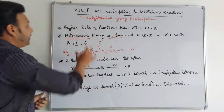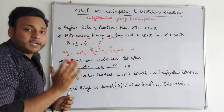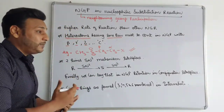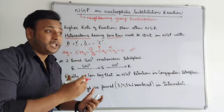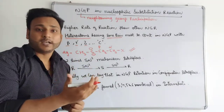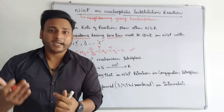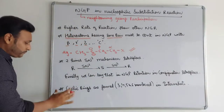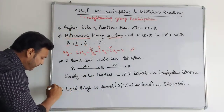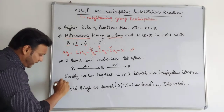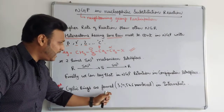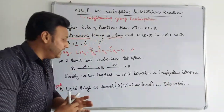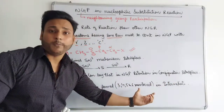Finally, we can say that in NGP, retention of configuration takes place. This is a very important point — if you have an optically active R-form substance, it will remain as an R-form substance after the reaction. Additionally, cyclic rings are formed in the intermediate — this cyclic ring formation is a key feature of NGP.